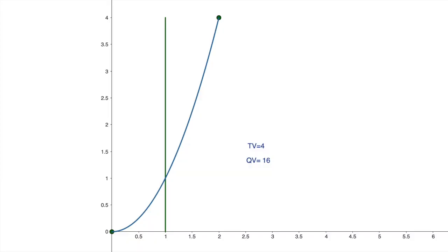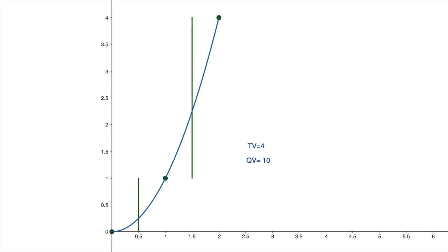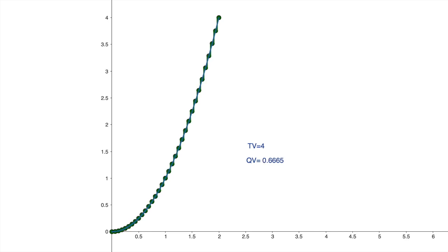We will now illustrate the calculation of the total and quadratic variation of this function visually. As in the previous example, we measure the distance between the start and end values of the function. The total variation is 4, as expected. We then divide the interval into 2 sub-intervals and measure the deviations in each sub-interval. We then keep splitting each sub-interval until the partition becomes very dense. As this function is also monotonically increasing, the total variation is not affected as we increase the number of sub-intervals. However, the quadratic variation decreases until it becomes 0.